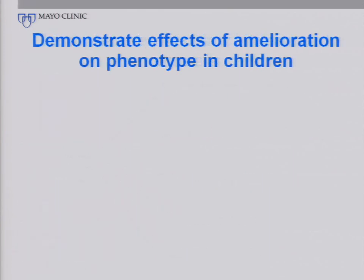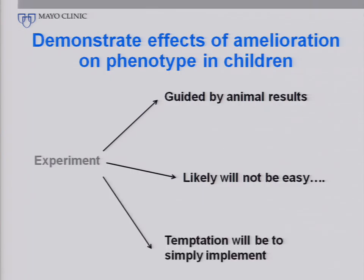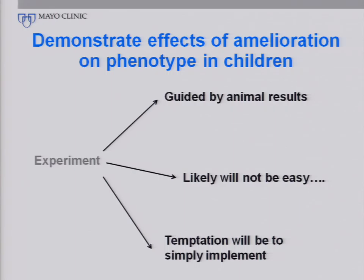Finally, in terms of demonstrating amelioration — that's the experiment part of Sir Hill's paradigm — I think we always have to guide these by animal results, especially if we're trying to be true to any link between animal and human phenotypes. This is not going to be easy at all, because the temptation is going to be to just do it. Once we find something that looks like it works in animals, it may be difficult to maintain equipoise and not go ahead and immediately implement these in children.